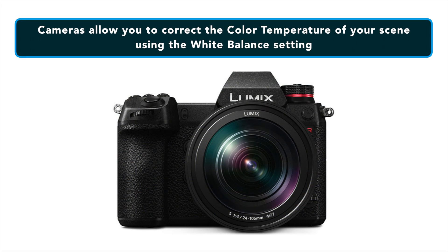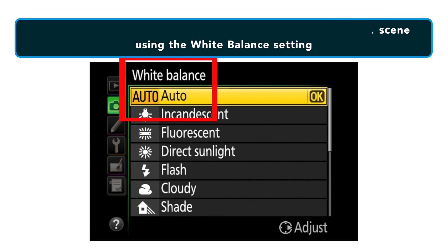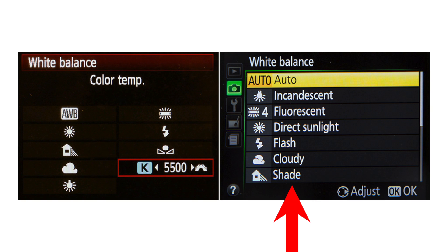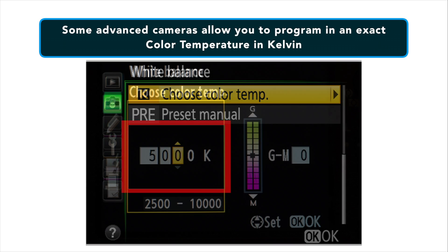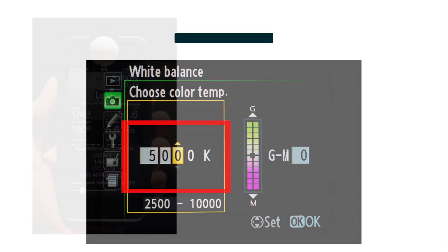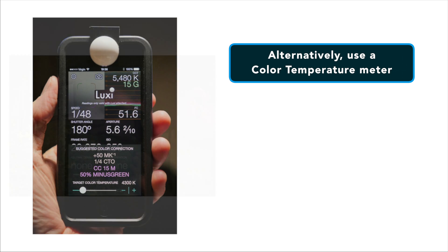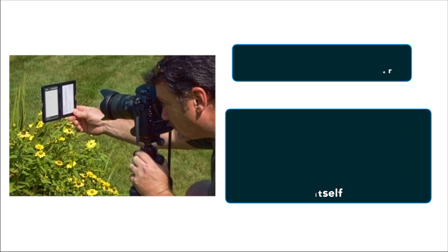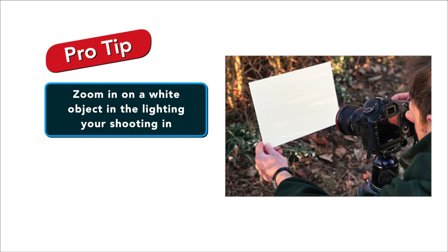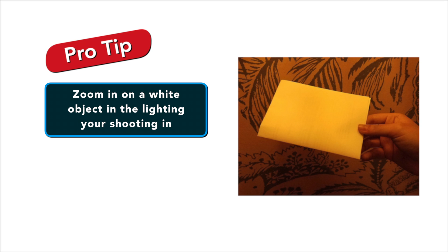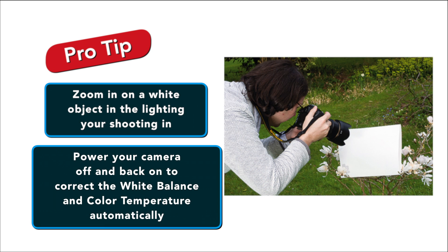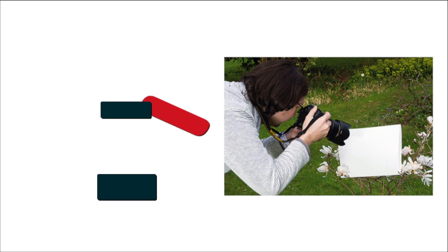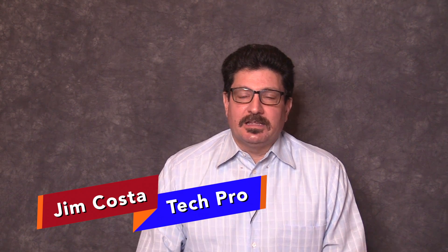Cameras allow you to correct for these color casts by telling them the color temperature of your scene — this is done using the white balance setting. Simply tell the camera what type of lighting your scene has, such as daylight, shade, tungsten, etc., and it will automatically apply the appropriate color temperature internally. For even more accurate control, some advanced cameras allow you to program in the exact color temperature in degrees Kelvin. You can get a precise value using a color temperature meter, or by pointing your camera at a white object under the same lighting and letting the camera calculate the temperature itself — zooming in on a white t-shirt or piece of paper, turning the camera off and on, and then zooming back out is a very easy way to fix it.